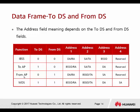When To DS is 0 and From DS is 1, this frame is coming from the AP. The frame format is slightly different: address 1 is the destination address, address 2 is the BSS ID showing which AP it came from, and address 3 is the source address showing where the frame originated.